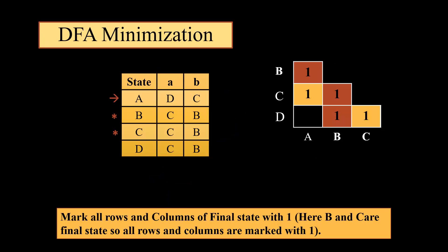Now we start with the minimization. As per the lower triangulation minimization matrix, since we have four states, we will draw a 3×3 lower triangulation matrix. We will put all the states excluding the first state in the rows and all the states excluding the last state in the columns. We will mark the rows and columns of final states with one. Here we have B as a final state, so we will mark the row and column corresponding to B with one.